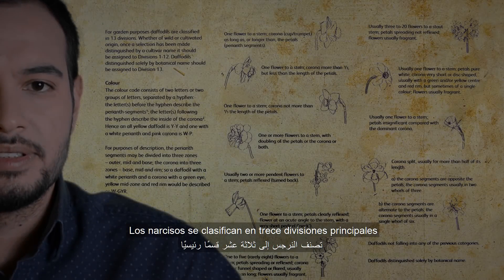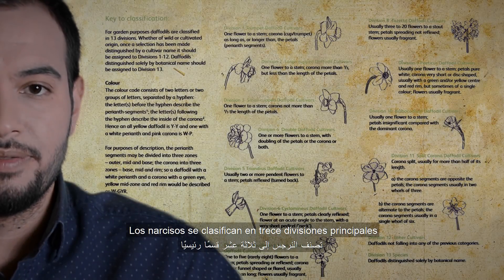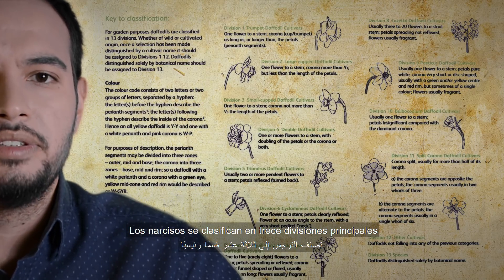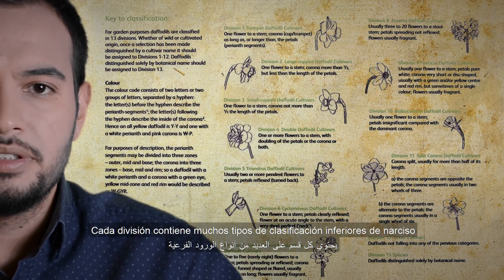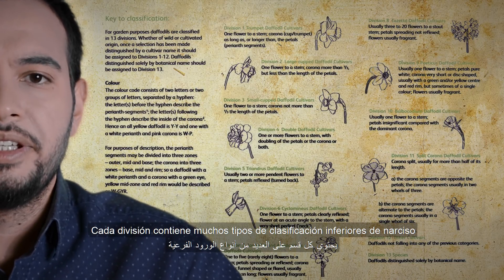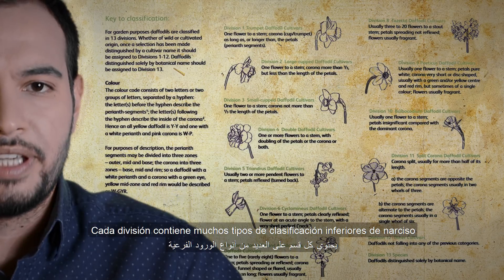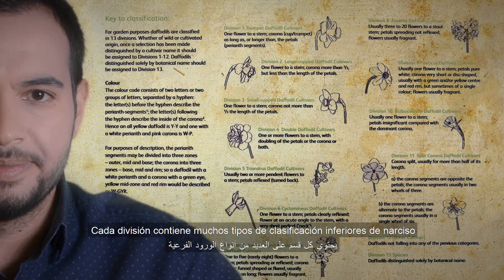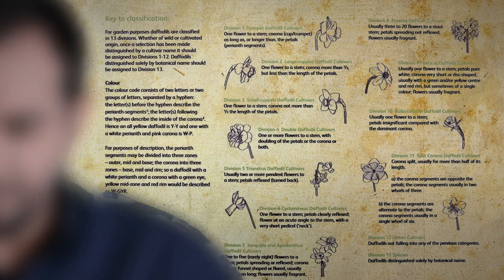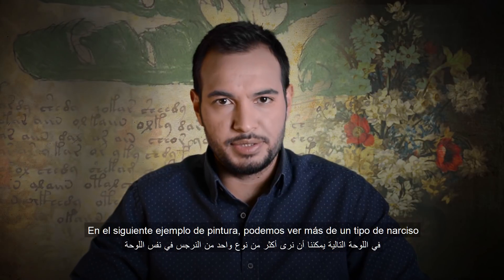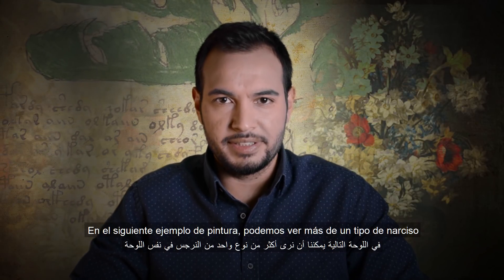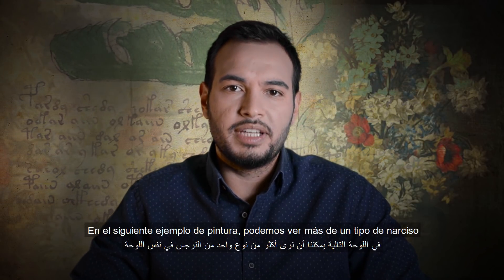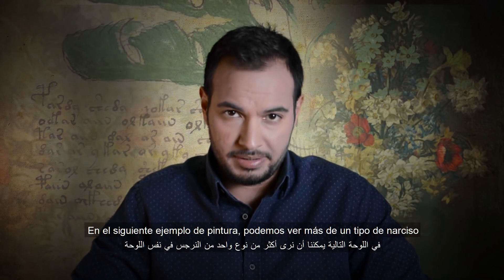Narcissus flowers are classified into 13 main divisions, and each division contains many lower classification types of Narcissus. In the next painting example, we can see more than one type of Narcissus.